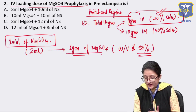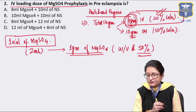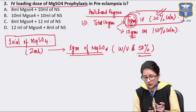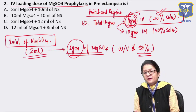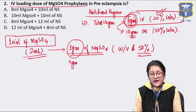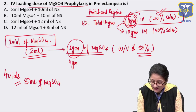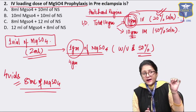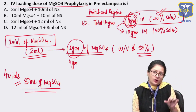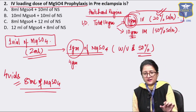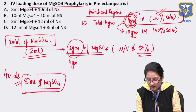The answer is 8 ml of magnesium sulfate plus 12 ml of NS, making a total of 20 ml, which is a 20% weight by volume solution. This same principle applies in the Zuspan regime where the whole regimen is IV — we always make the IV solution 20% using this formula.